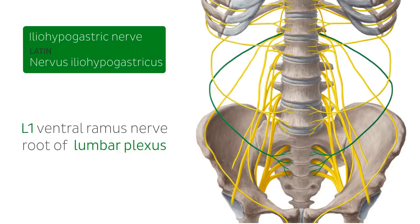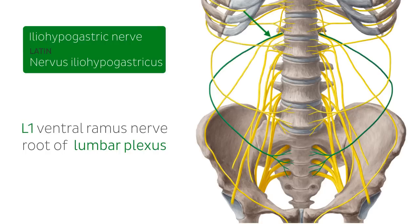The lumbar plexus is this collection of nerves just here. The iliohypogastric nerve arises initially with the ilioinguinal nerve as a single nerve root. This short common trunk soon divides into the iliohypogastric nerve and the ilioinguinal nerve at the lateral edge of the psoas major muscle, giving us the ilioinguinal nerve in yellow and the iliohypogastric nerve in green.